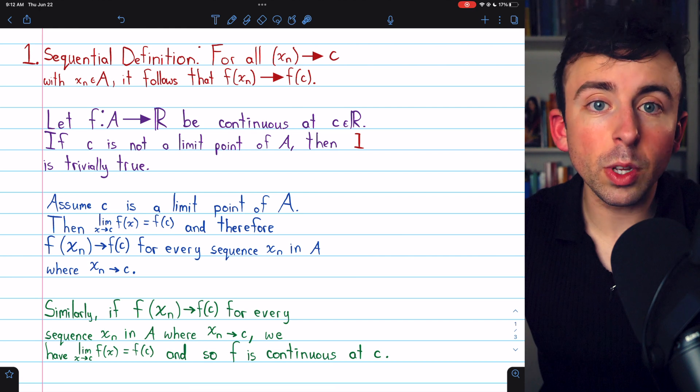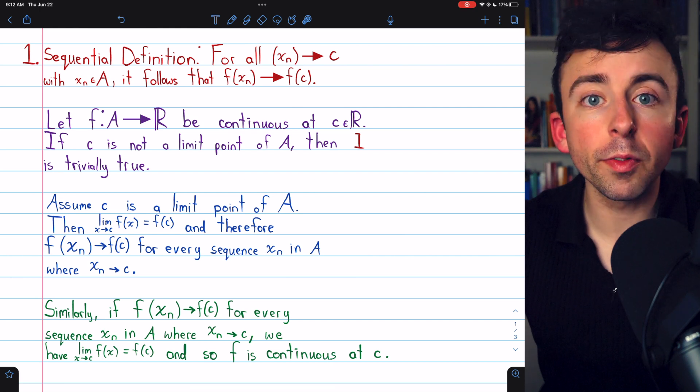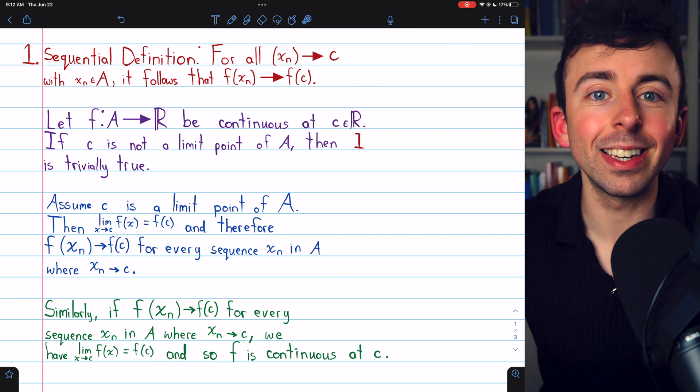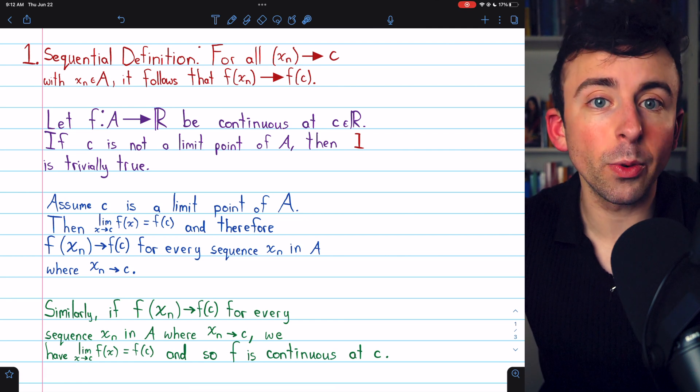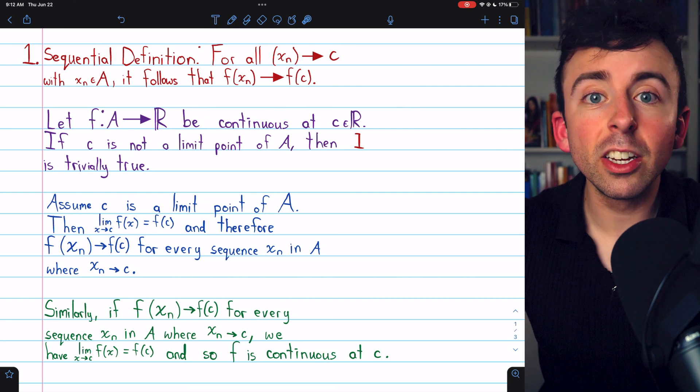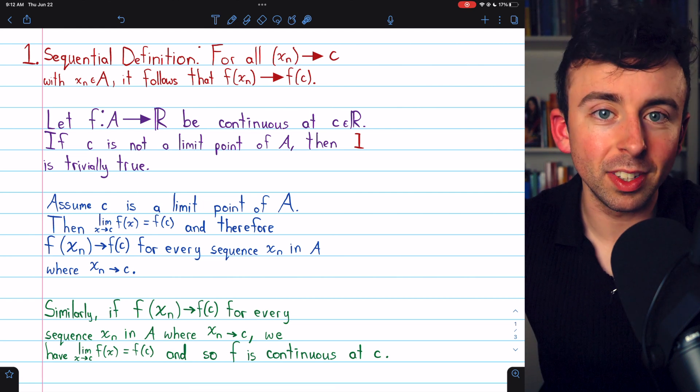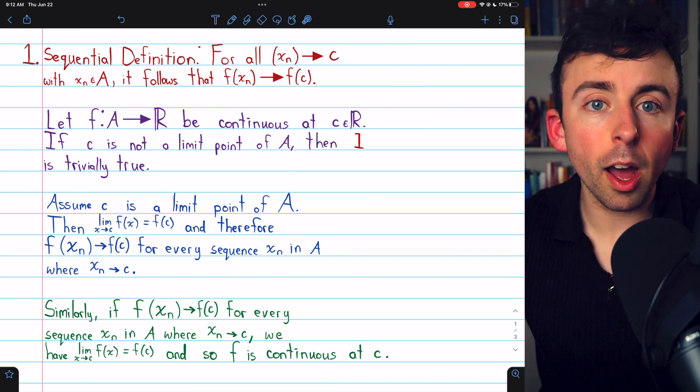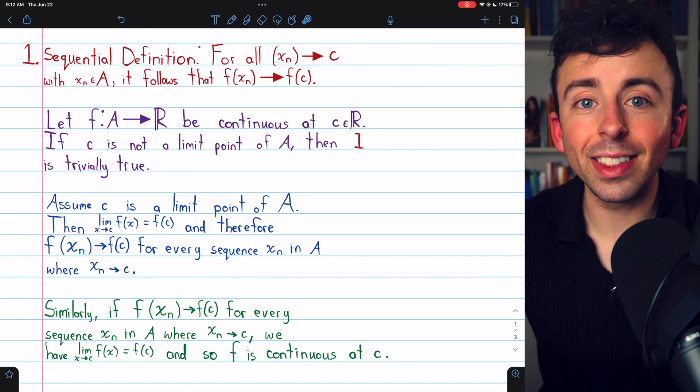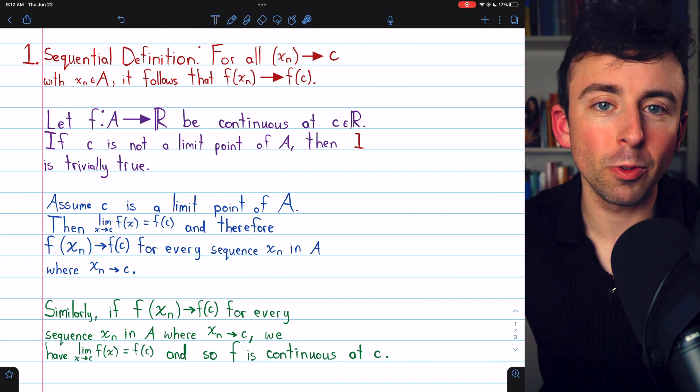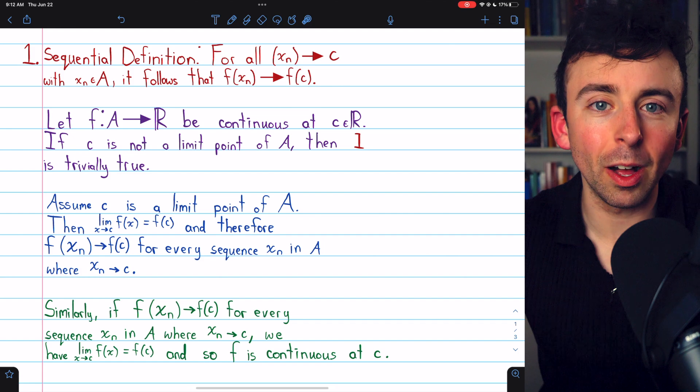This, of course, also gives us a handy criterion for determining that a function is not continuous at some point c. We would just need to find a sequence in the domain converging to c but whose images do not converge to f of c. I'll leave a link in the description to a lesson where we try doing that. Let me know in the comments if you have any questions and if you find these real analysis videos helpful, please consider supporting Wrath of Math on Patreon. Link in the description. It's a huge help. Thanks for watching.